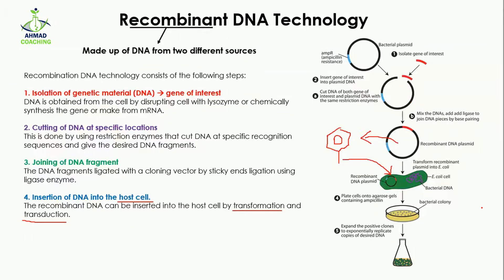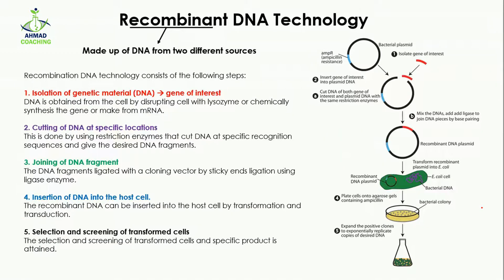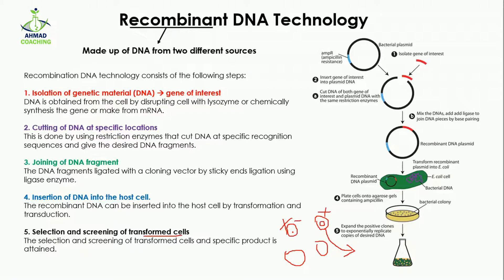We are entering this into our host cell because the host cell has the machinery to convert this DNA into protein, so that we can check whether our protein is being synthesized or not. In the last step, you are going to select and screen the transformed cells. After transformation, some cells may have our desired plasmid and some may not. We have to select the positive clone — separating our transformed positive cells — because we don't need cells that don't have our gene of interest.